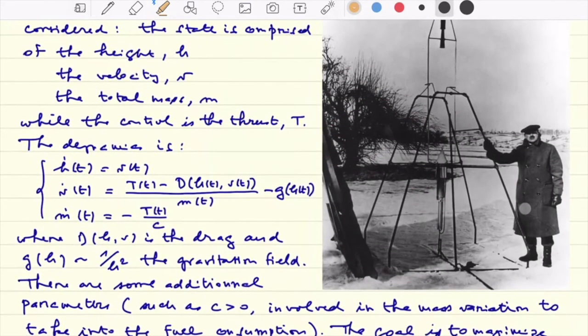The dynamics involves the thrust T, capital T, and clearly the derivative of h is the velocity. The velocity in its derivative involves the thrust T, some drag D, so this is the drag D, or the thrust within the control just here. Clearly we divide by m to have the acceleration here, and of course we have the potential G, which is a 1 over h square potential due to gravitation here.